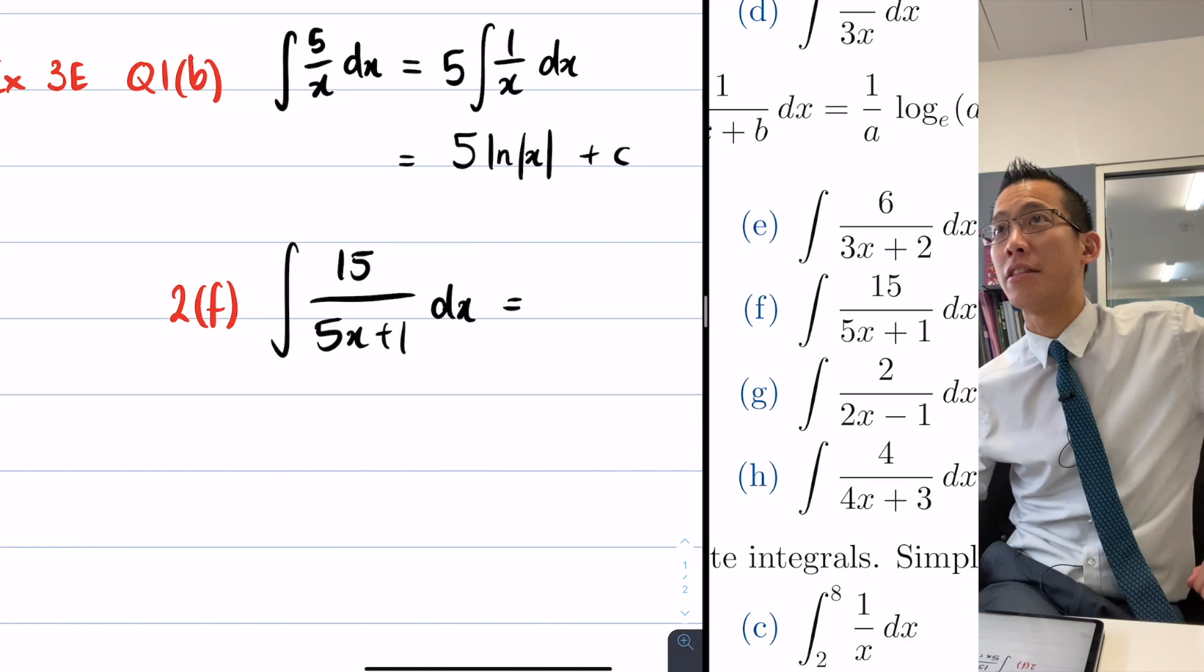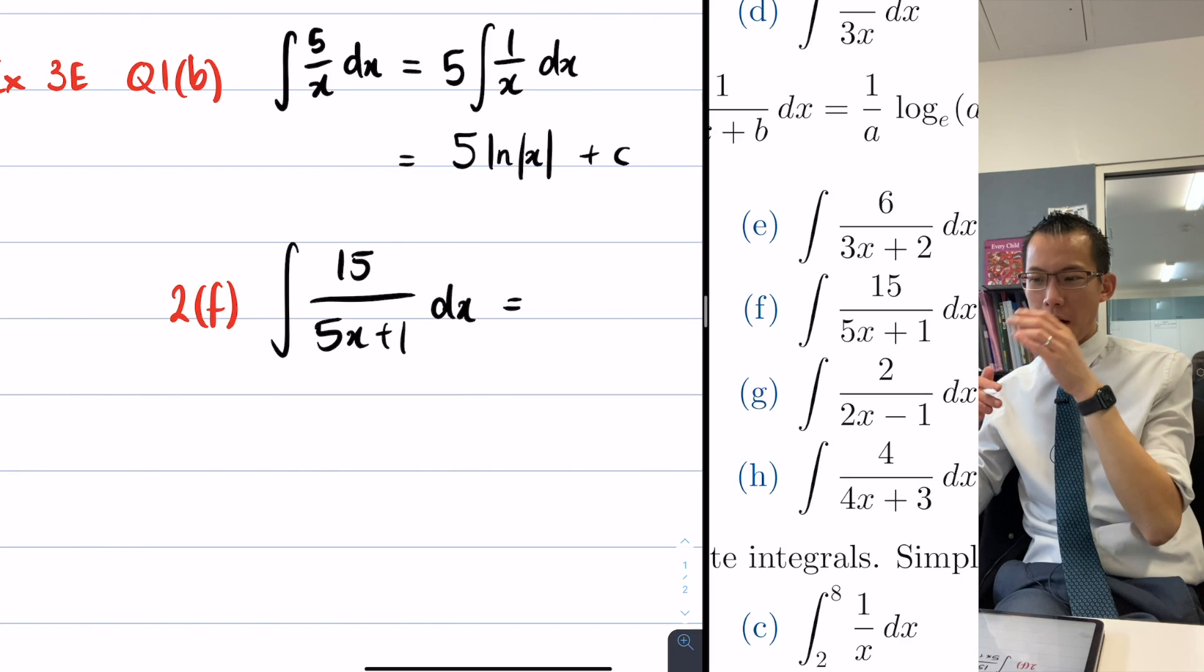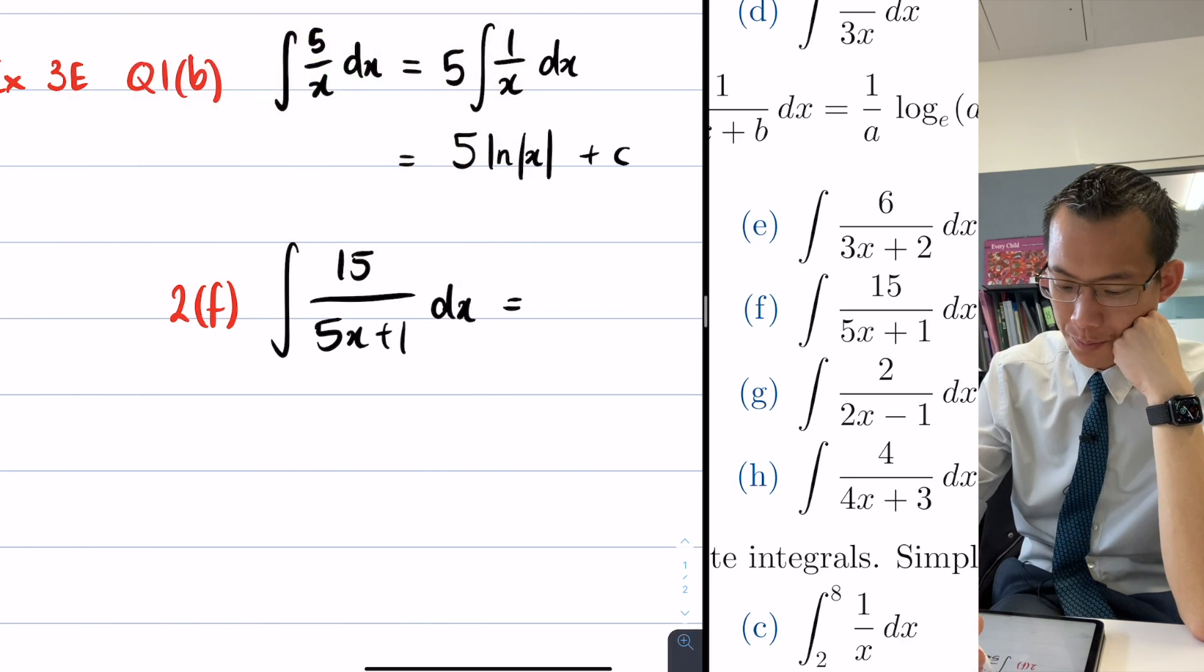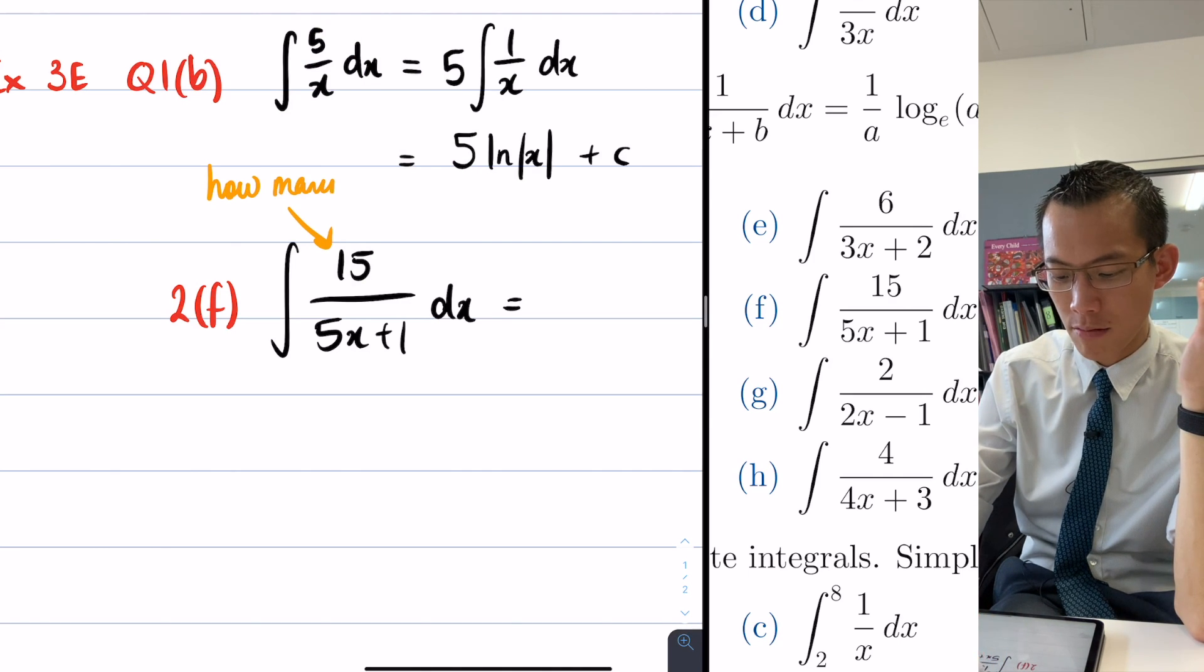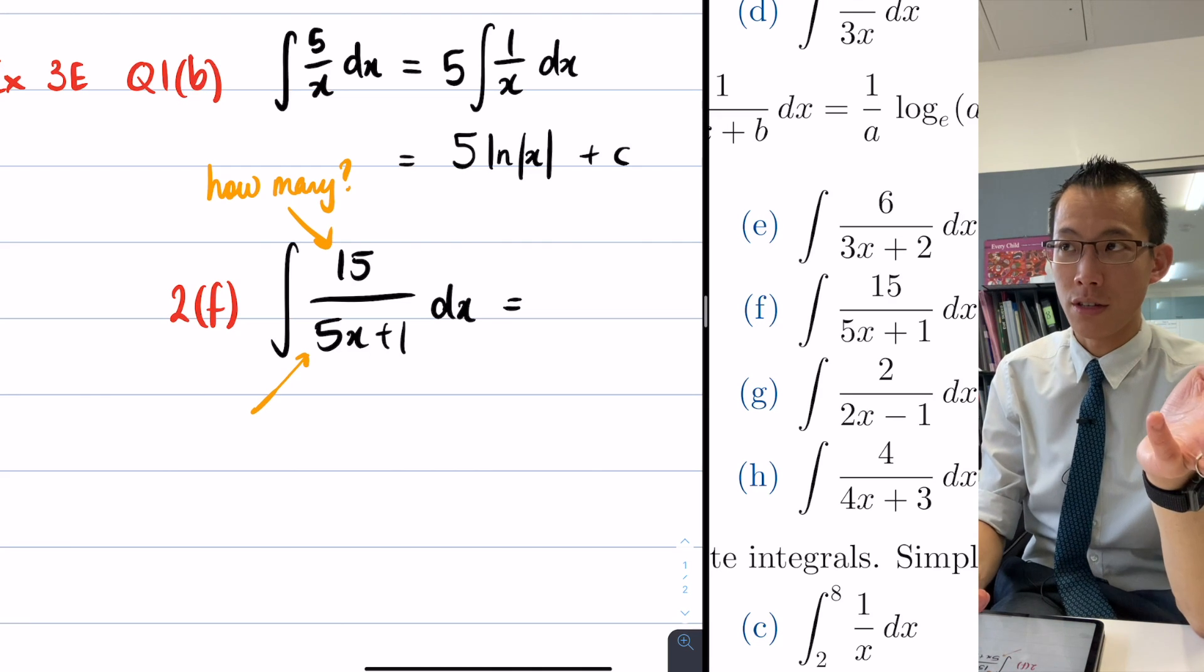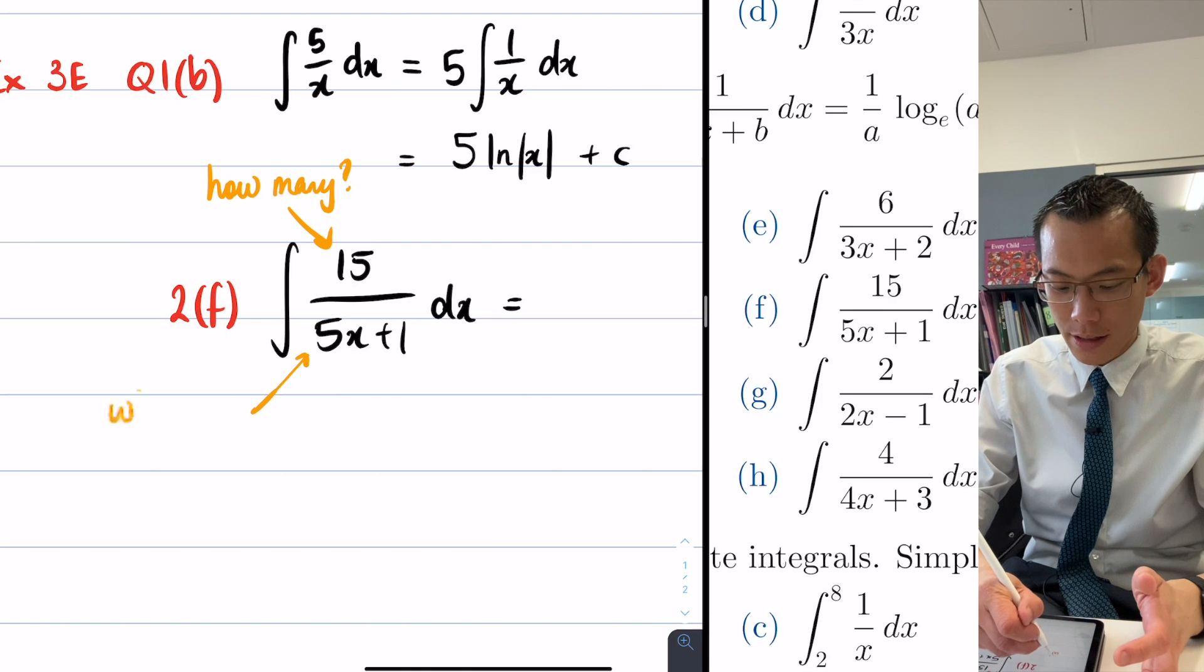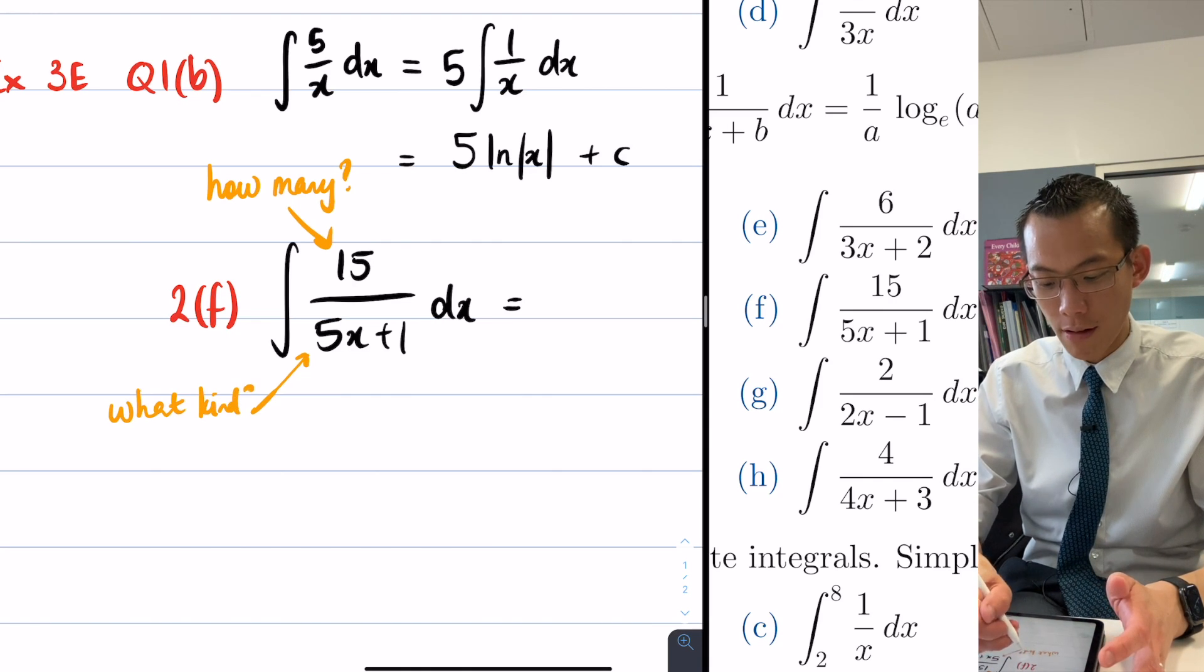So fractions are weird in that the numerators and denominators behave very differently, right? In a real way, what the numerator is telling you is whatever kind of number we're dealing with, how many do you have, right? And then what the denominator is telling you is, yeah, that's right, it's like, what are the containers? What's the size? You know, what kind? Like, you're telling me how many, but what kind of thing do we even have, right?